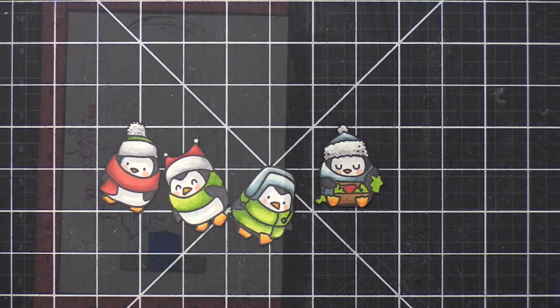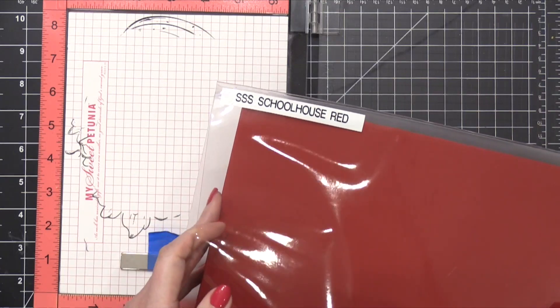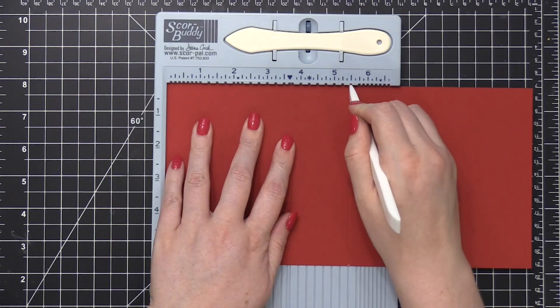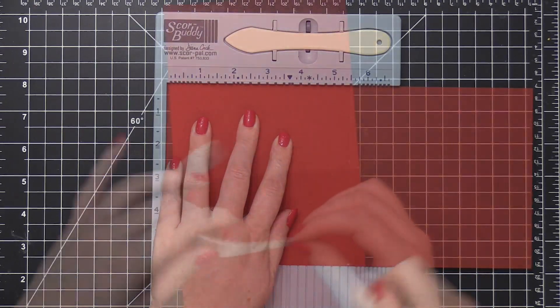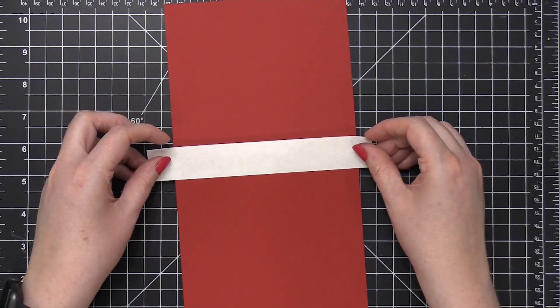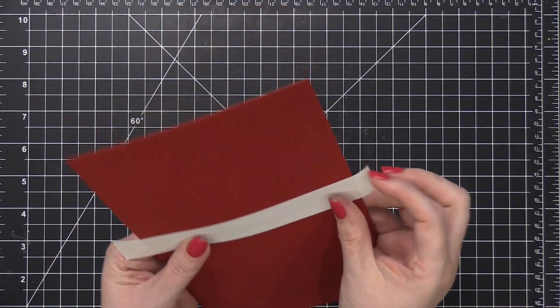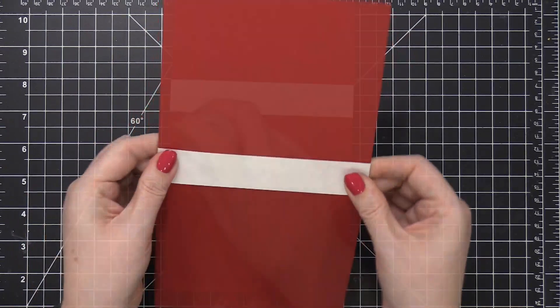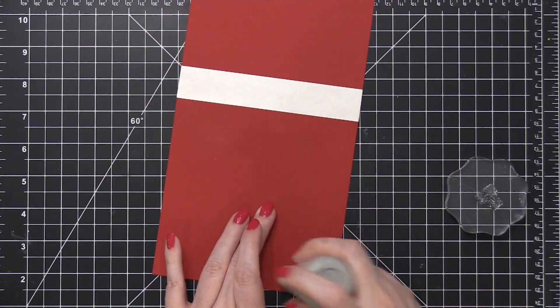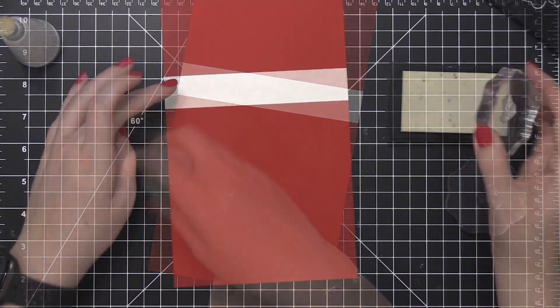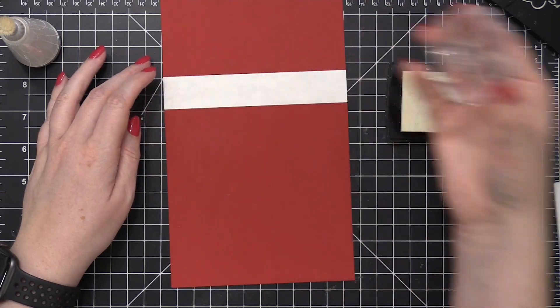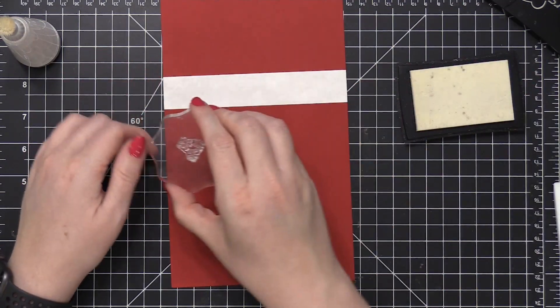So now I'm going to work on the card base. The card base is made out of school house red card stock from Simon, and I've cut that to 5 1⁄2 by 11. And then I scored that at 5 1⁄2 to create a finished size of 5 1⁄2 by 5 1⁄2. I took some Post-It tape and placed that right above the fold, and then I prepped the area just around the outer edge with an anti-static powder tool.